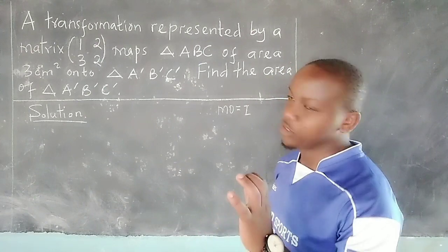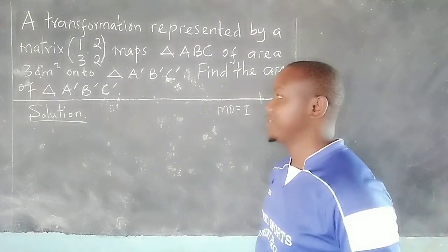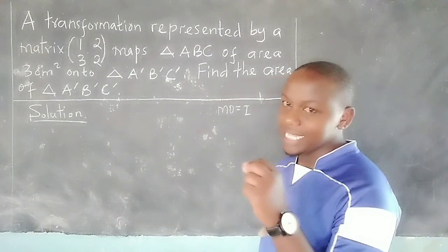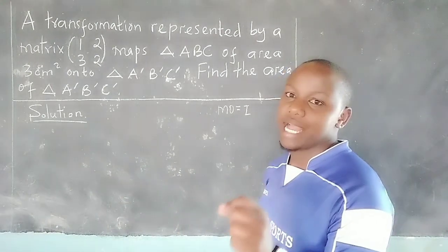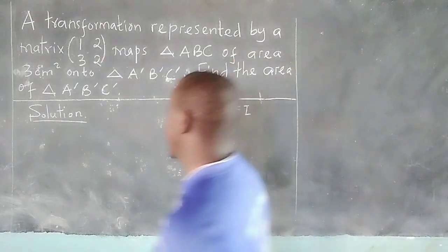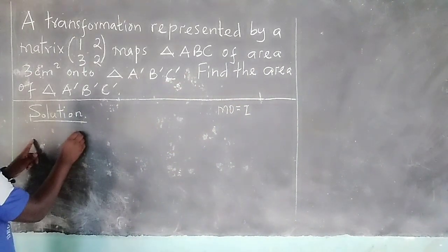we first of all get the determinant of the matrix, which we say that its absolute value is equal to the area scale factor. First of all, we get the determinant,